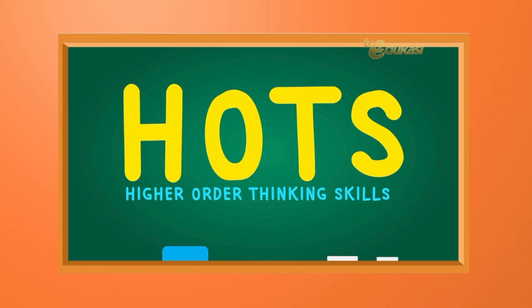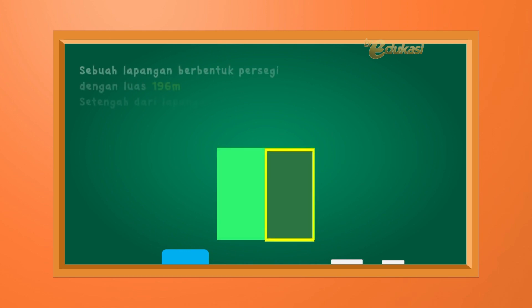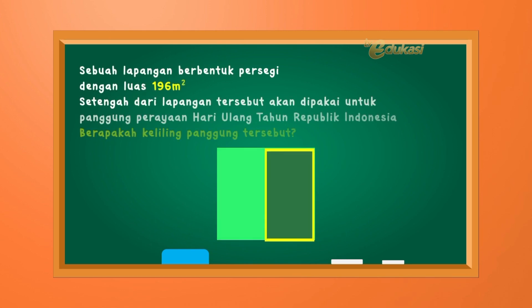Baik. Ingat, belajar matematika bersama Pak Ridwan membuat matematika menjadi lebih mudah. Baik, anak-anak, Bapak akan memberikan soal akar pangkat dua dalam bentuk HOTS, atau Higher Order Thinking Skill, atau berpikir tingkat tinggi. Perhatikan soal berikut ini: sebuah lapangan berbentuk persegi dengan luas 196 meter persegi. Setengah dari lapangan tersebut akan dipakai untuk panggung perayaan hari ulang tahun Republik Indonesia. Berapakah keliling panggung tersebut?